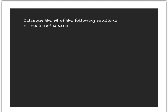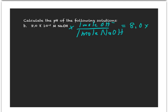Now we have a solution of a strong base. With a strong base, it is a strong base, so when sodium hydroxide dissociates, we get one mole of hydroxide ions for every one mole of sodium hydroxide that dissolves. And so we end up with 8.0 times 10 to the minus 5 molar hydroxide ions.